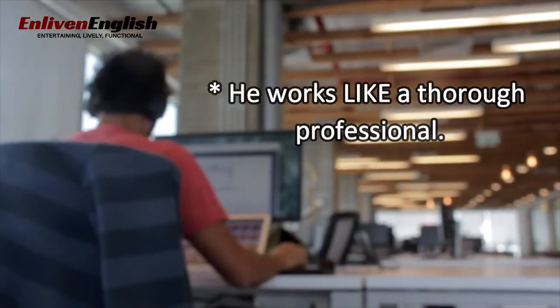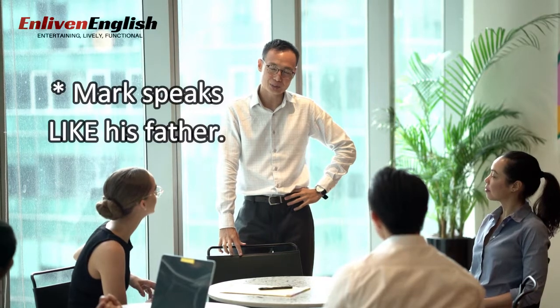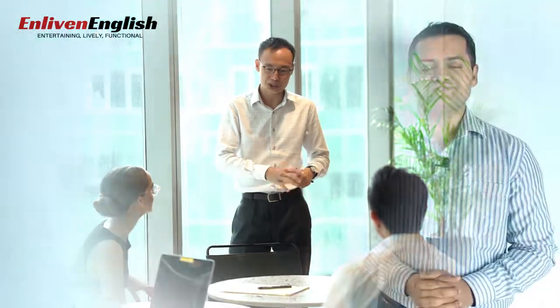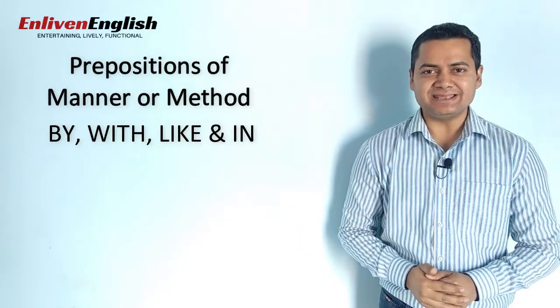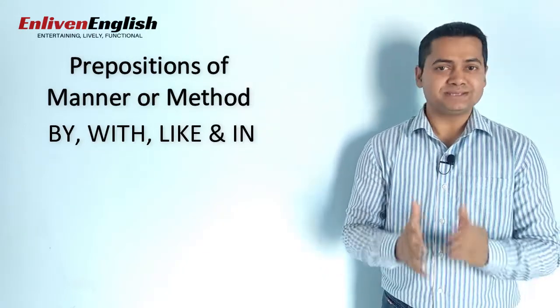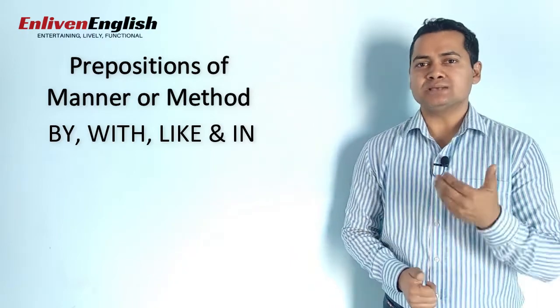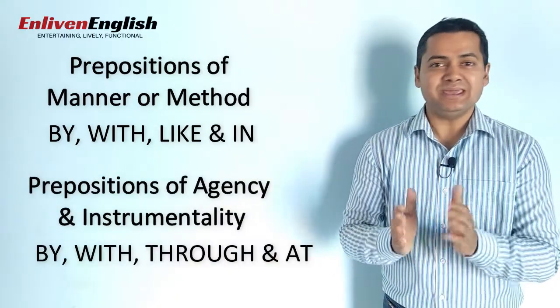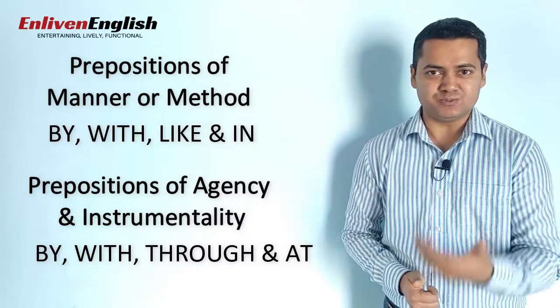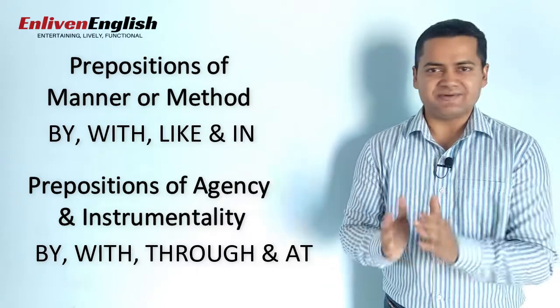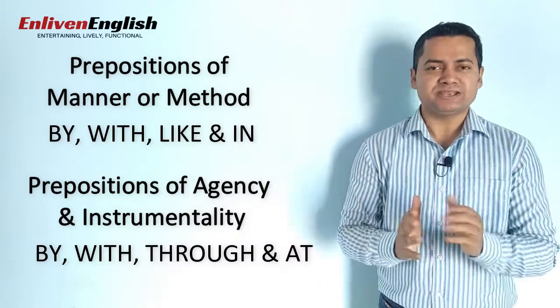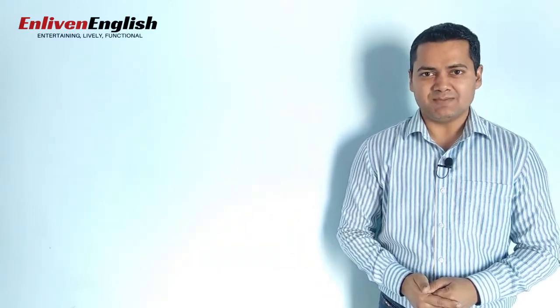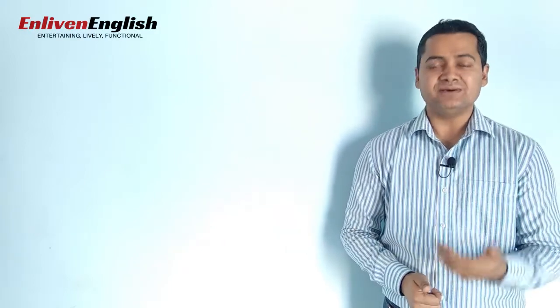He works like a thorough professional. Mark speaks like his father. In all these sentences, we are telling the manner in which something was done or is done — answering the question of how something or somebody performed. I hope now you will be able to use prepositions of agency, instrumentality, method or manner easily and correctly. If you still have any doubts, please do get in touch with me. In the next lesson, we will study prepositions of inference, motive, source or origin. Keep learning and keep improving. Goodbye.